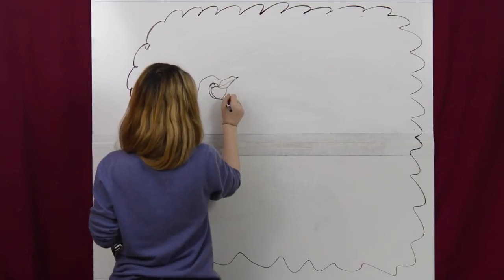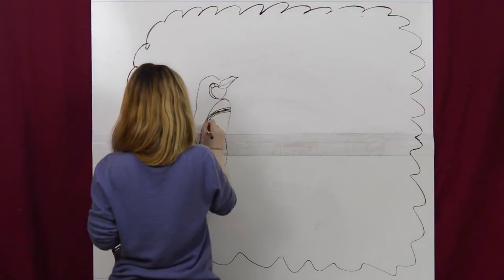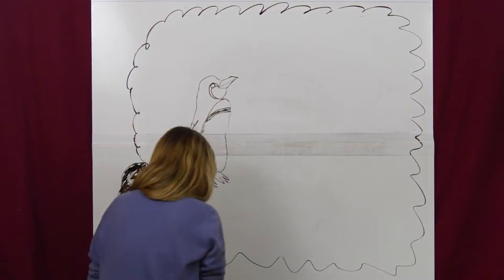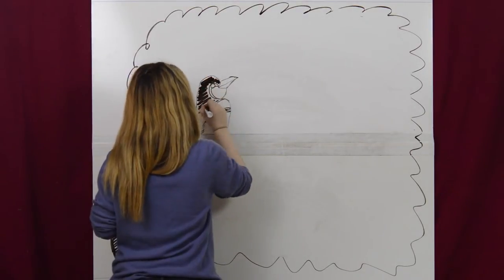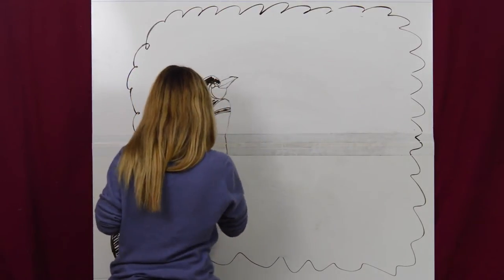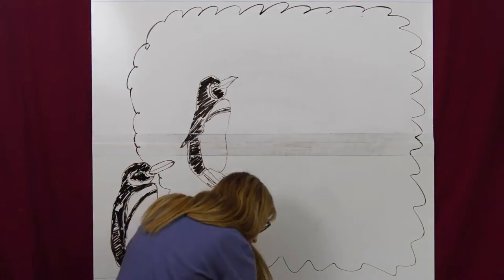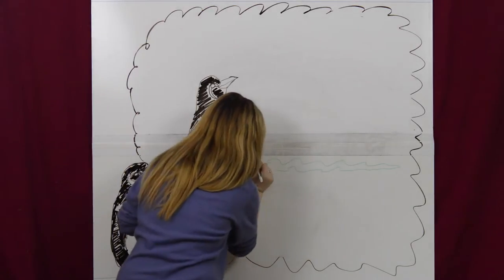Galapagos penguins lay their eggs in caves or holes in the volcanic rock in order to reduce predation on their eggs. They also vocalize, attack, and use body movements to scare away predators. This is most effective when a group of penguins confronts a predator.